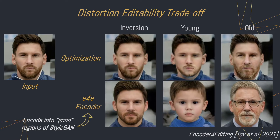These approaches have also given rise to a distortion-editability trade-off: the more accurate the inversion is, the less editable it typically is. Some works, such as Tov et al.'s E4E, attempted to balance this trade-off by encoding into well-behaved regions of StyleGAN.